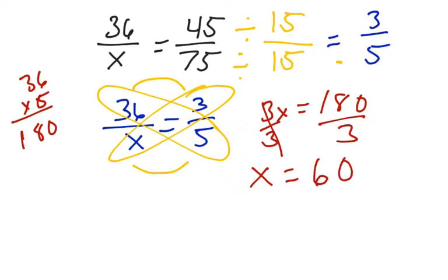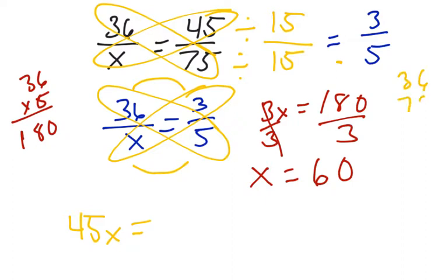Now I could have just solved this problem by diving right into cross multiplication—for some of you that might be faster, for others it might be faster to reduce first. But let me show you what happens. We would get 45 times X, which is 45X, and then we'd have 36 times 75,